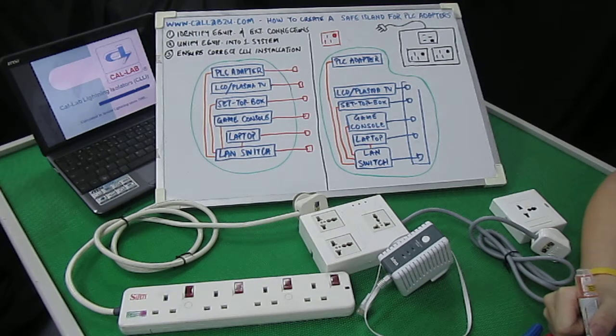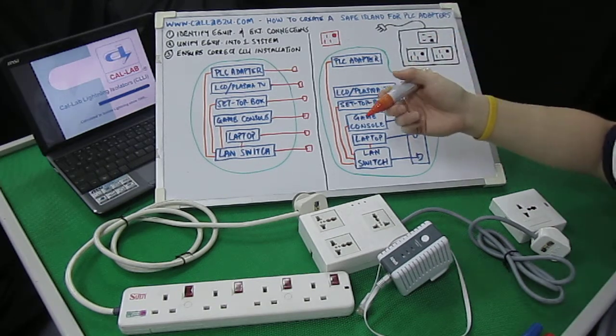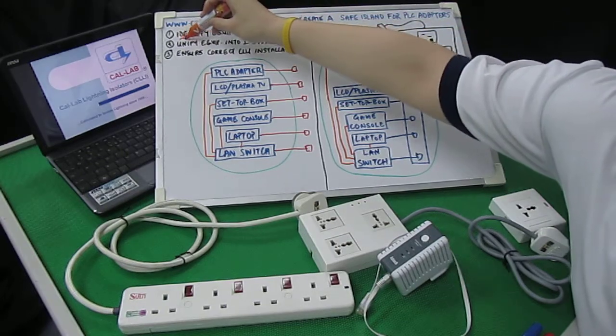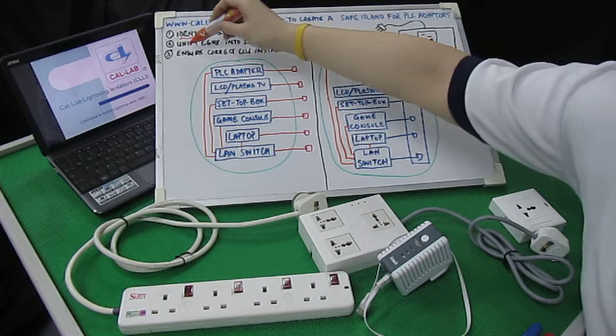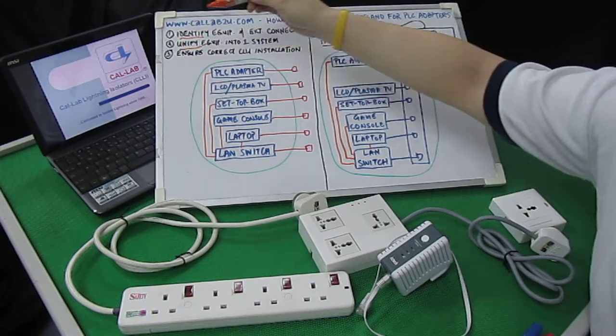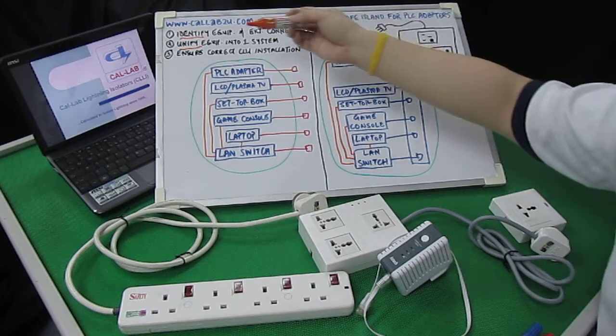As in previous segments, we're going to go through the same three-step process. The first step is to identify the equipment that you want to protect as well as the external connections coming in. The second step is to unify the equipment in that setup into a single system. And the third step is to ensure correct CLLI or correct CalLab Lightning Isolator installation.